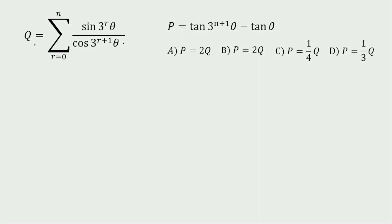Today we're going to solve a question from trigonometry. The question is: q is given in summation form as sine(3^r · θ) / cos(3^(r+1) · θ), and p is given a value. We have to find how p and q are related — that is, p = λ·q — and find that constant λ.